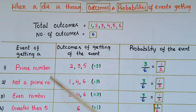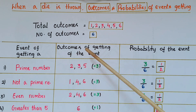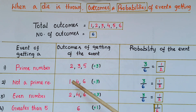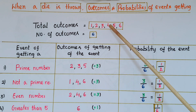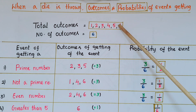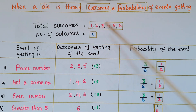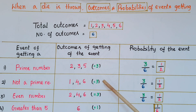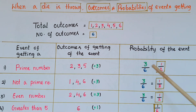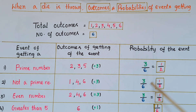Next one is not a prime number. So outcomes of getting this event are 1, 4, and 6. So these are the not prime numbers. Total outcomes here are 3, so probability of the event is 3 by 6, that is 1 by 2.